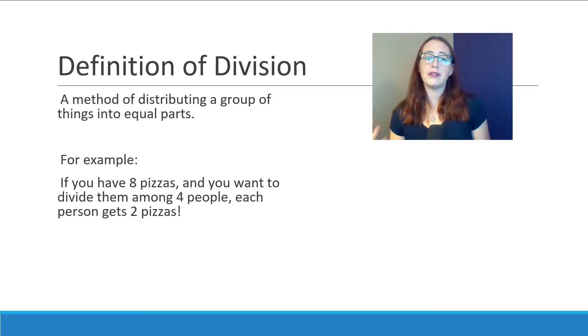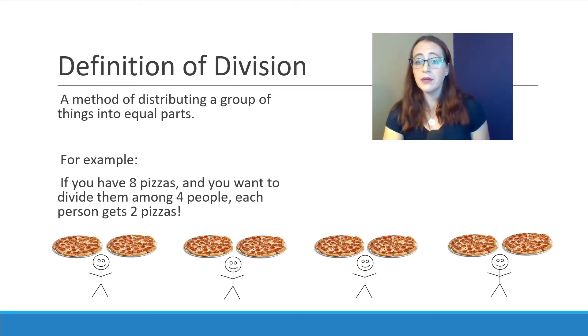In its simplest description, division is the concept of distributing a group of things into equal parts. So if we have 8 pizzas and we want to distribute them across 4 people, that gives us 2 pizzas per person.